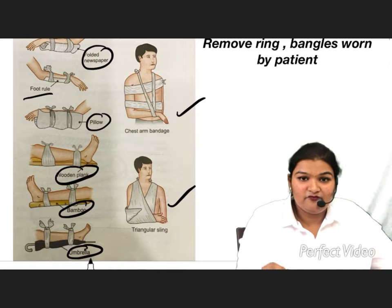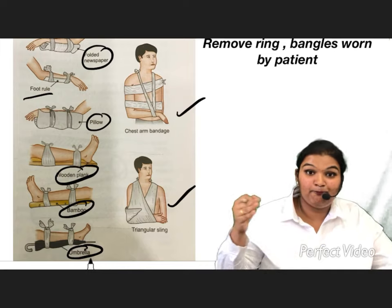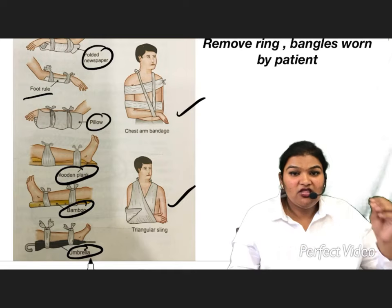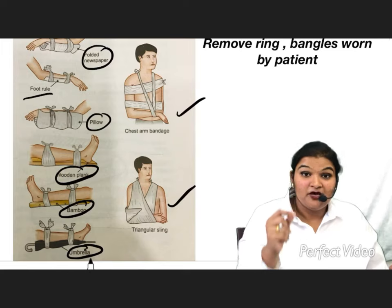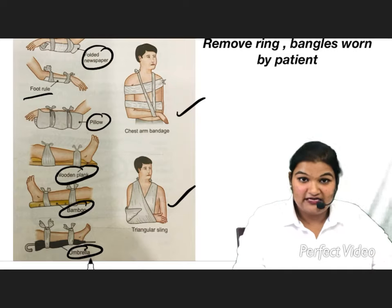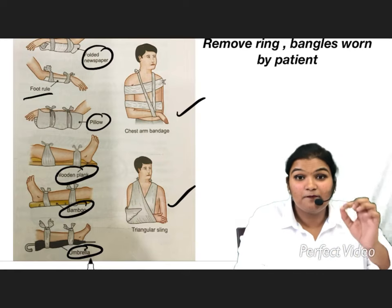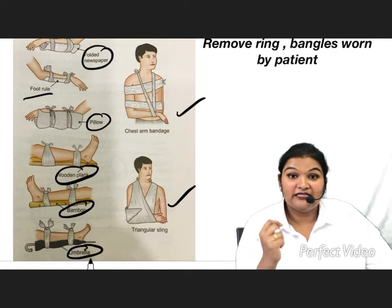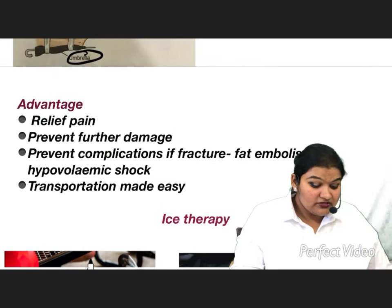Before putting the splint, check for gross deformities — if applying simple traction or pressure corrects them, do so before splinting. After applying the splint, check for distal pulsation to confirm blood supply is intact and there is no compression or internal bleeding. Then quickly assess the nerve: take a small pinch over the affected area — if the patient reacts and withdraws, the nerve fibers are intact. If not, rush to hospital immediately.